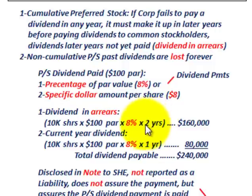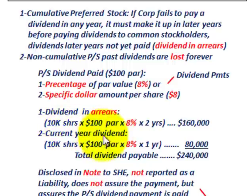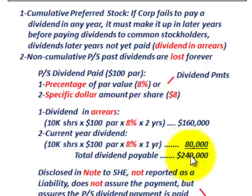We would have to pay those two years in arrears first. That's 10,000 shares at $100 par amount times 8% dividend rate times two years in arrears, which equals $160,000. For the current year dividend, that's 10,000 shares at $100 par amount times 8% for one year, equaling $80,000. So the total dividend payable is $160,000 in arrears plus $80,000 for the current year, for a total of $240,000.